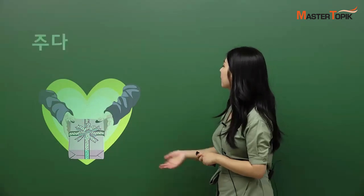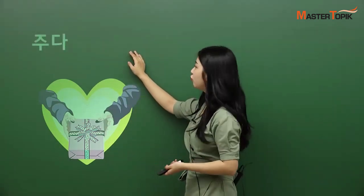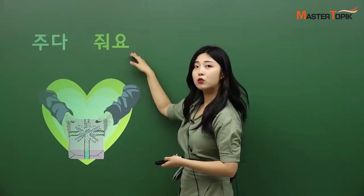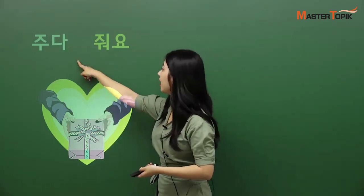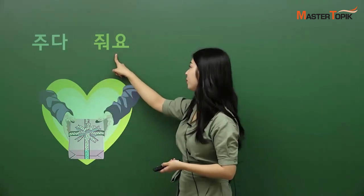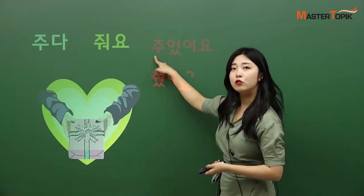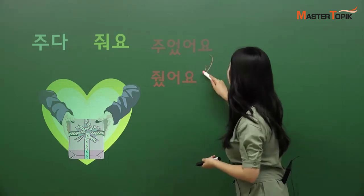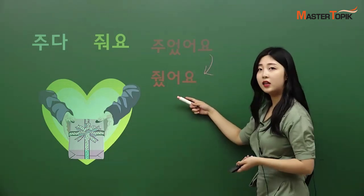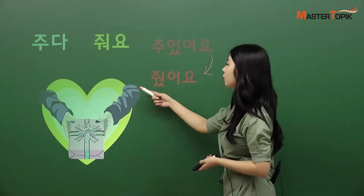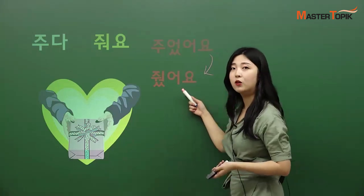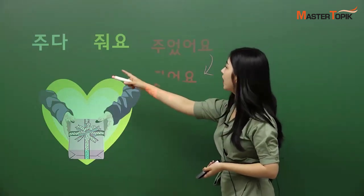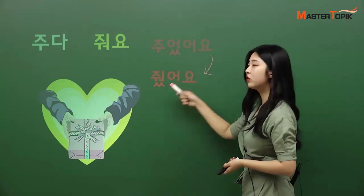Now you're ready to give your present to your friends. 주다 — give. 주다 → 줘요 → 주었어요, which gets shortened and pronounced as 줬어요. So: 주다, 줘요, 줬어요.